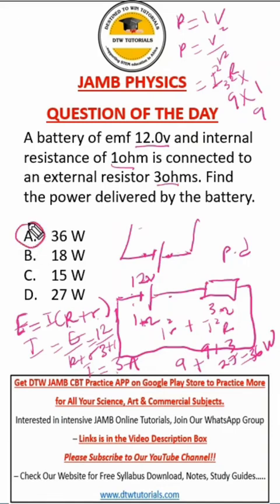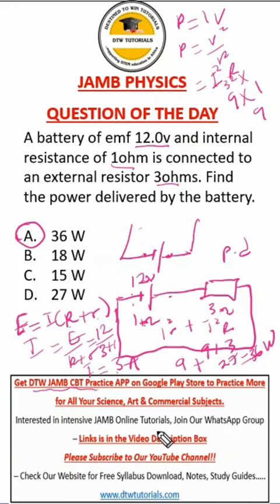Our right option here is option A. Thank you for staying tuned to the end of this video. Please don't forget to get the DTW Jam CBT app — you can download it from the Google Play Store. It contains all your past questions from 1992 till date with their correct solutions. You have your class notes there, your literature texts, all your literature books with summary questions. Everything is on the app — a wonderful app to use to prepare for your examination. Right now it is time to study and practice.